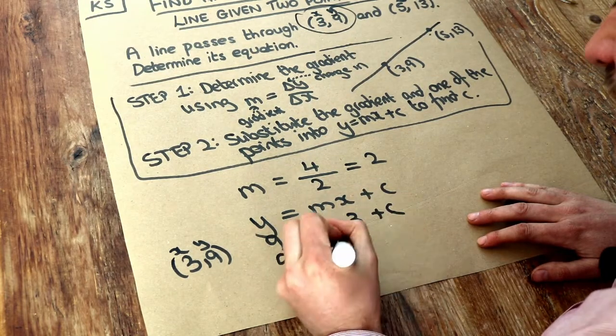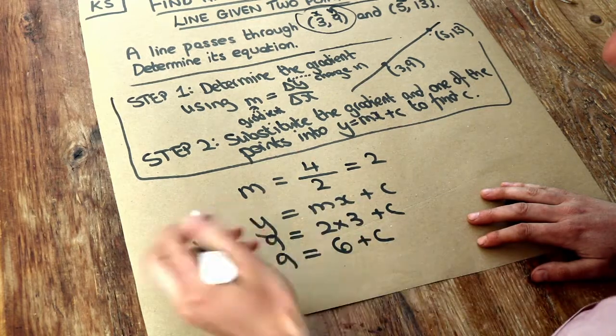Well, 9 is equal to 2 times 3 is 6, plus c. And 6 plus what is 9? Well, it's clearly 3.